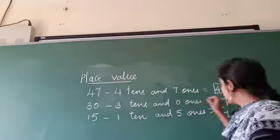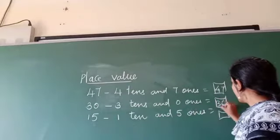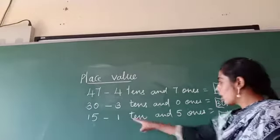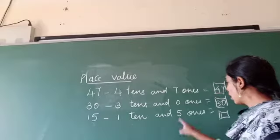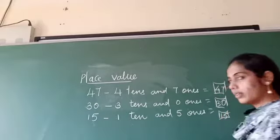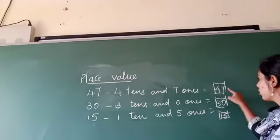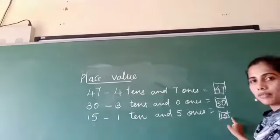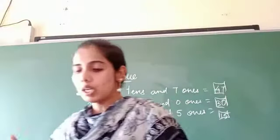How many tens? Three tens. How many ones? Zero ones. How many tens? One tens. One tens. How many ones? Five ones. Okay. Forty-seven, thirty, fifteen. Like this, you have to complete.